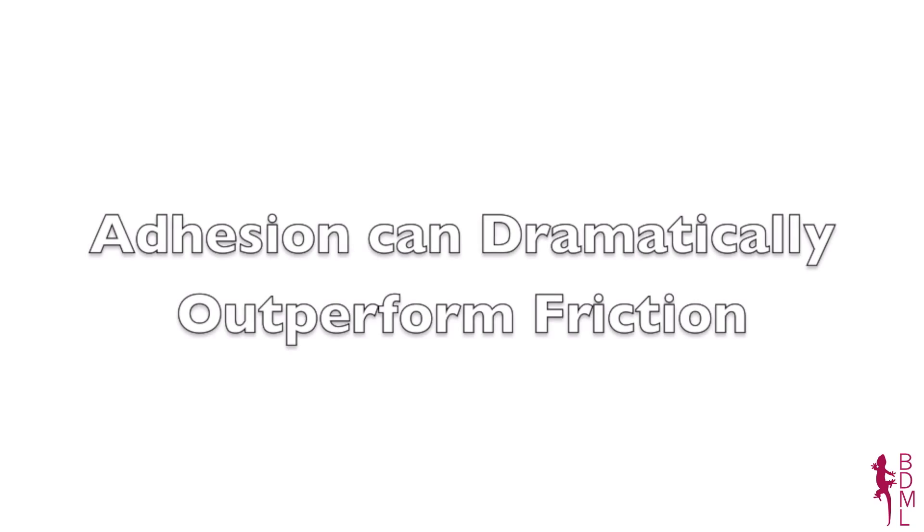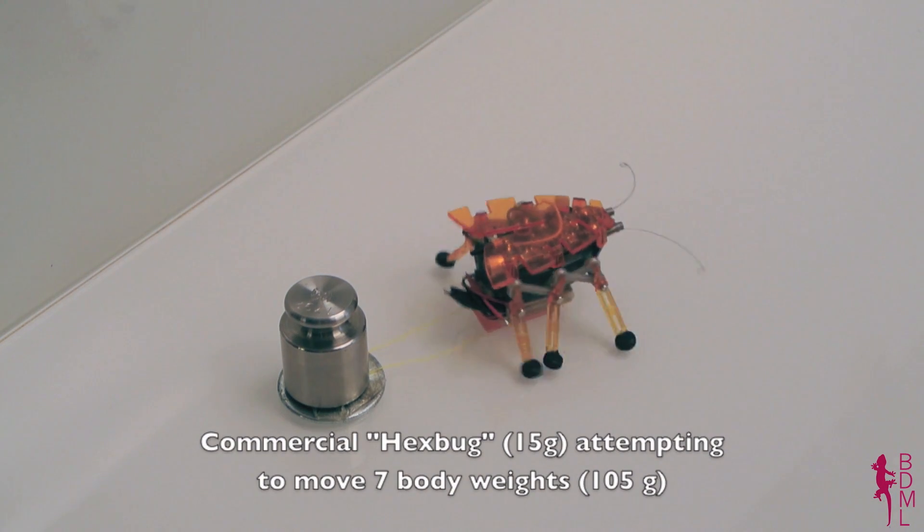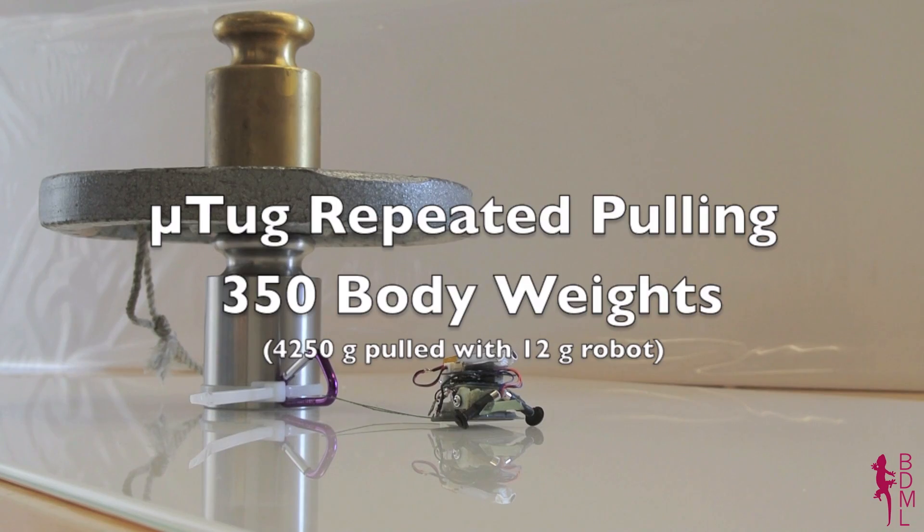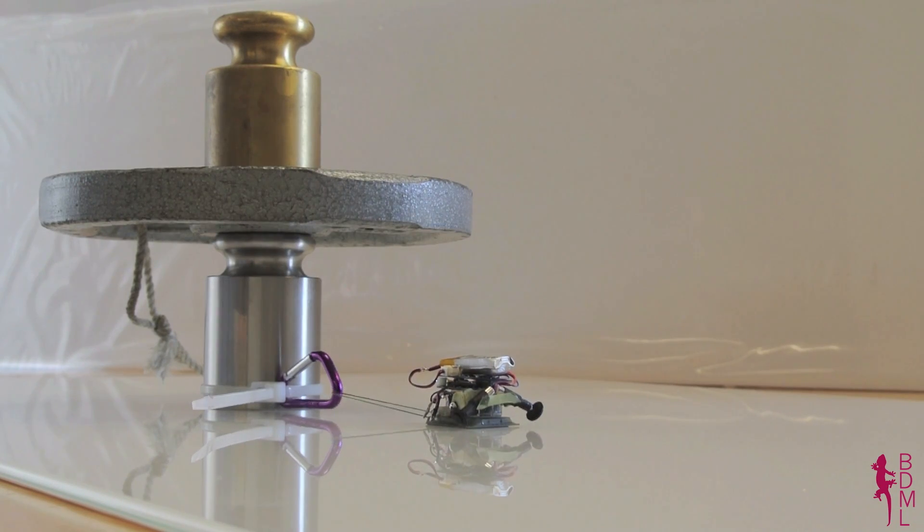The controllable adhesive used allows these robots to dramatically outperform comparable friction-based robots. Here we show the same 12 gram robot repeatedly pulling over 4.2 kilograms or 350 body weights.